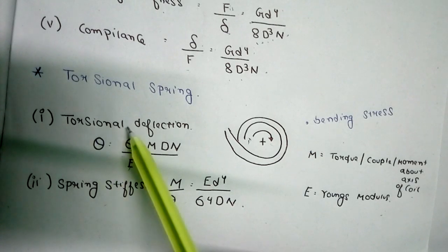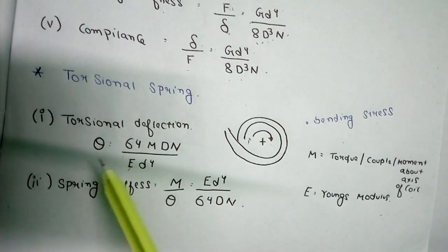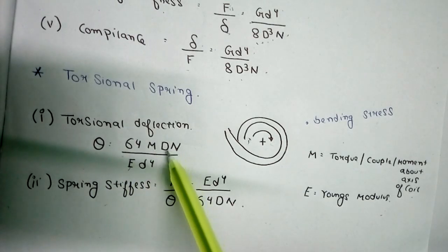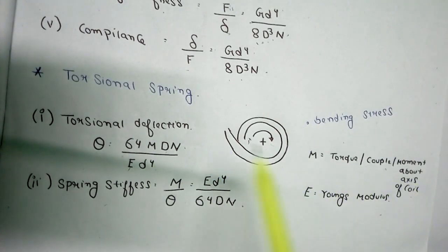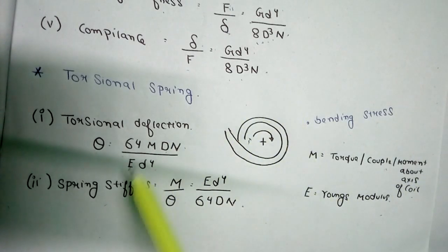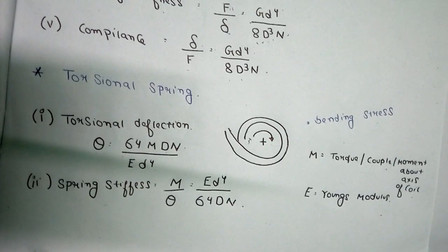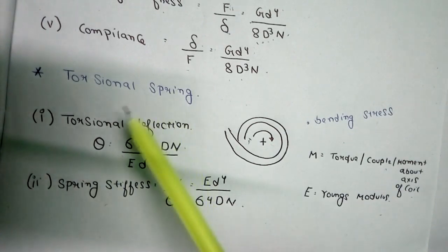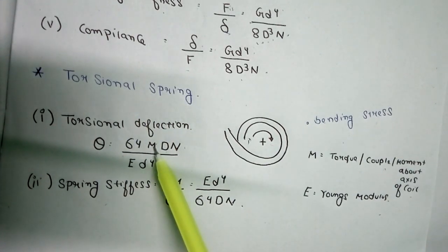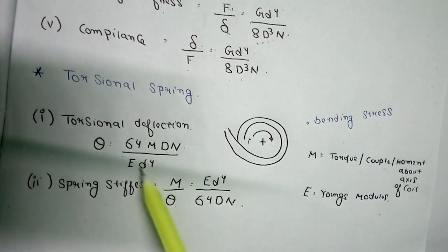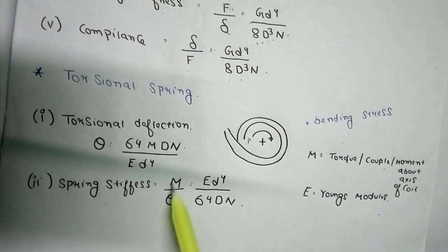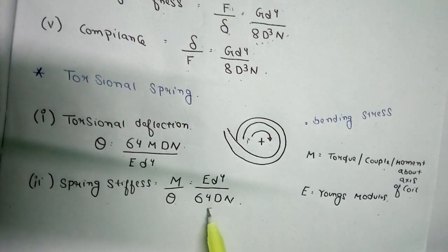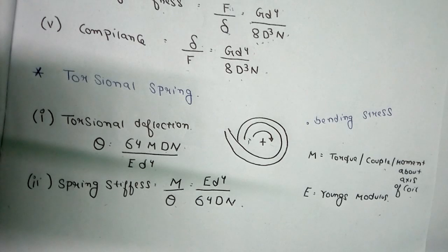For a torsional spring, the torsional deflection θ is given by: θ = (64 M D n) / (E d⁴), where M is the torque or couple or moment applied, n is the active number of coils, and E is Young's modulus (a material property given in the question). The spring stiffness for a torsional spring is M / θ = E d⁴ / (64 D n). Remember these two important formulas.